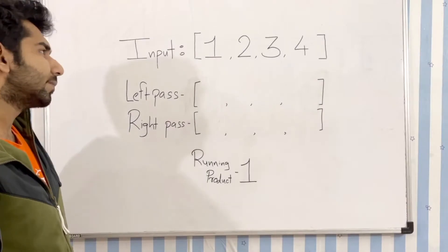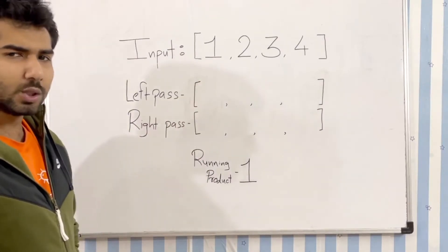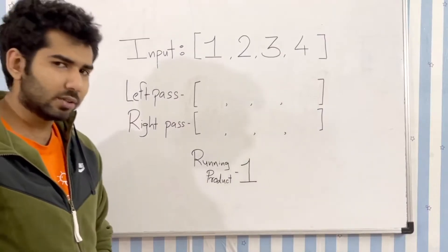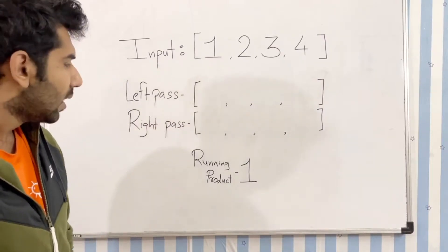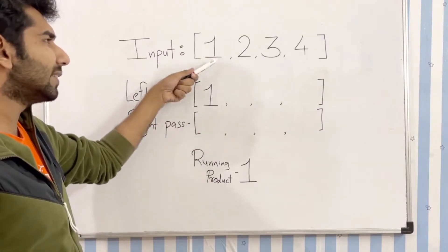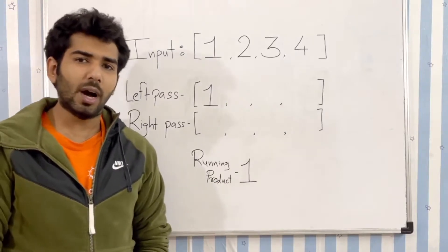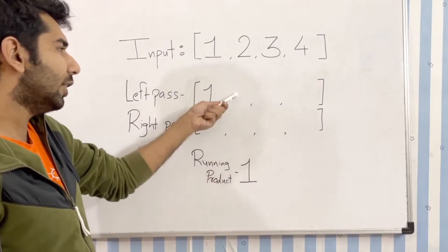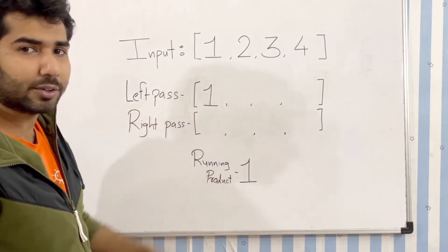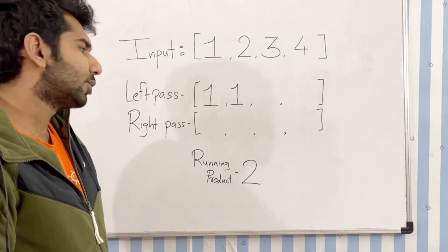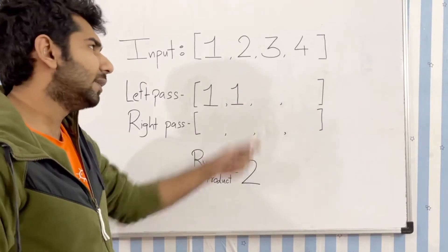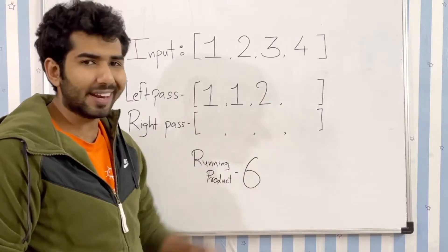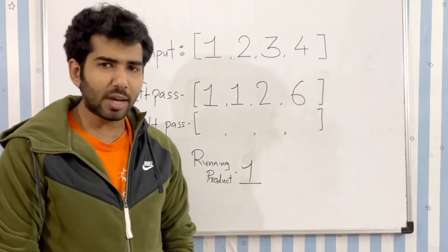We begin with our left pass. The first element we encounter is 1. We take the product of all elements on the left side of 1 — since there are none, the value is 1, so we put 1 there. Then we multiply 1 into the running product. At 2, we take the running product (product of all elements to the left of 2), put it there, then multiply 2 into running product. We do the same at 3 and 4, following the same pattern.